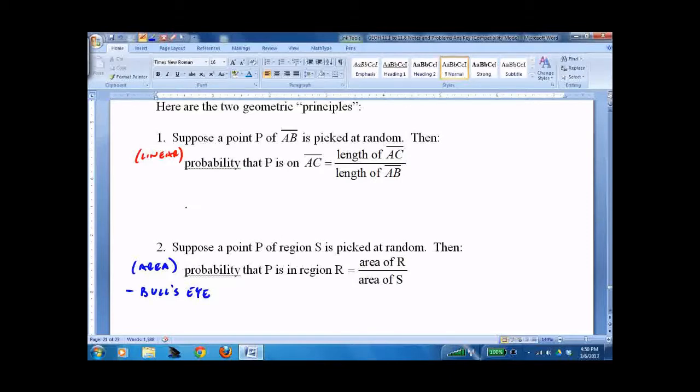This example uses a number line with points A, C, and B. If I randomly pick a point anywhere on this number line, with segments of length 7 and 6, what's the probability I hit a particular segment?